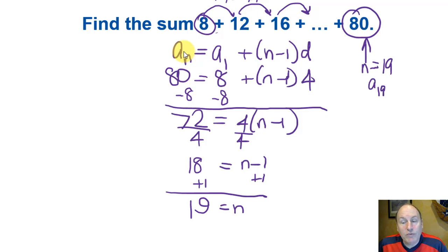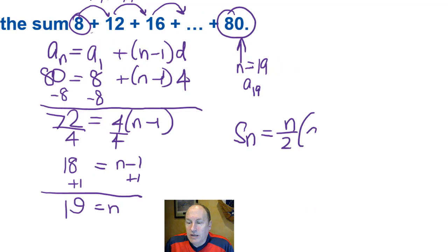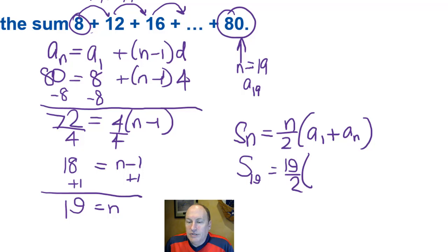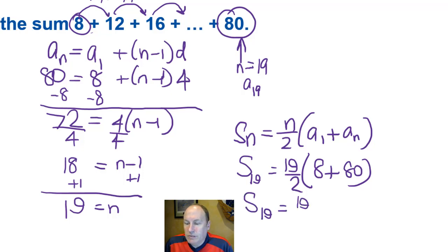Now that we know n, we can use the partial sum formula. S sub n equals n over 2 times the first term plus the last term. The sum of the first 19 terms equals 19 divided by 2 times 8 plus 80, which is 19 over 2 times 88. Calculating that gives us 836.